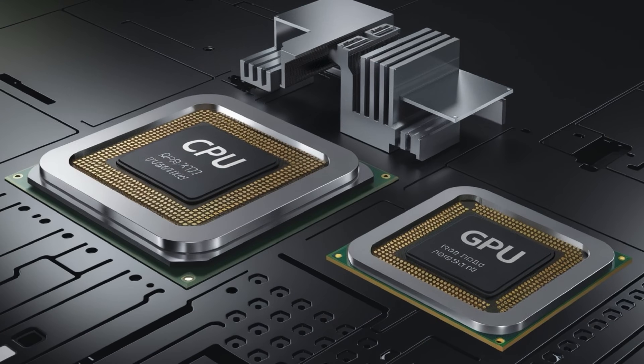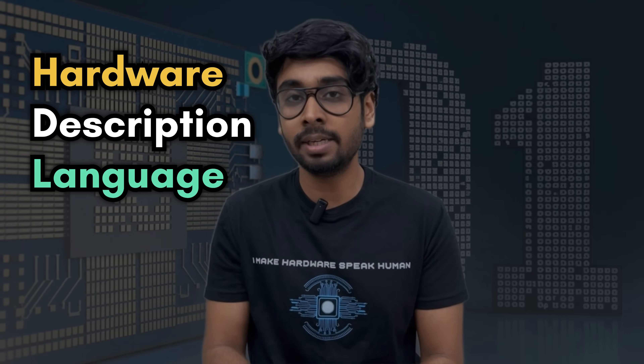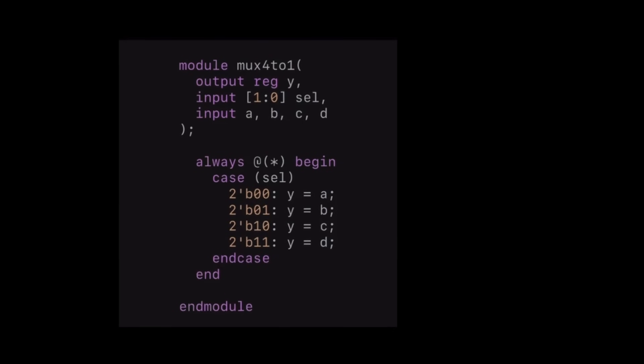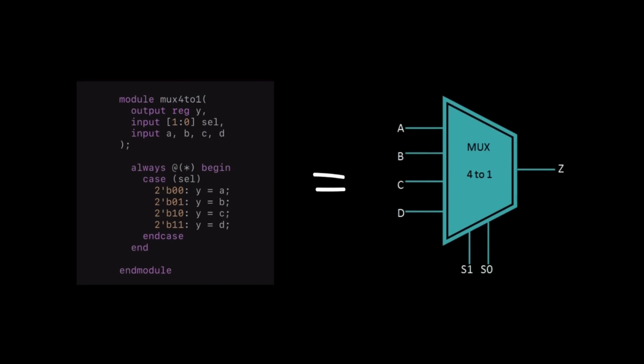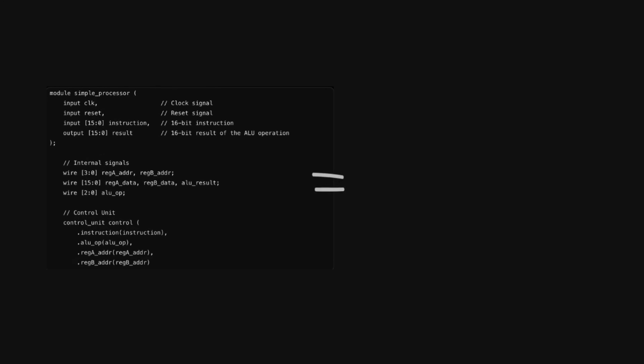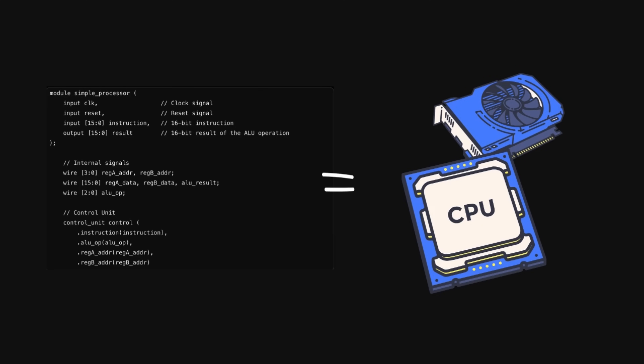The second language on the list is Verilog. All the powerful CPUs and GPUs you see around have been written in Verilog first. Verilog is a hardware description language — you basically describe the hardware using Verilog. For example, writing a case statement in Verilog means you're describing a MUX. The whole processor architecture is first written in Verilog as RTL code, and then this RTL code gets mapped to hardware that goes into your processor.